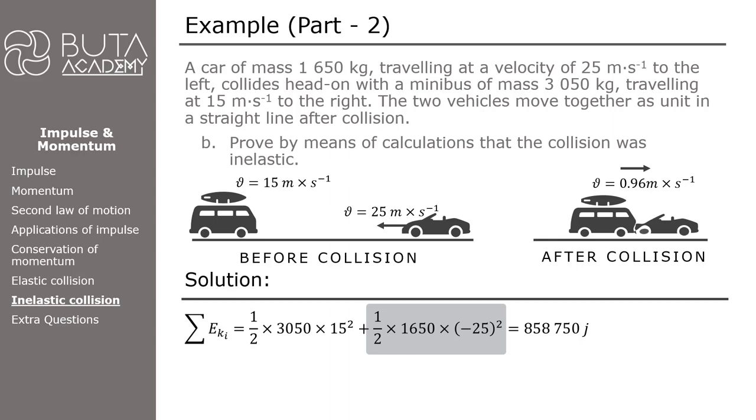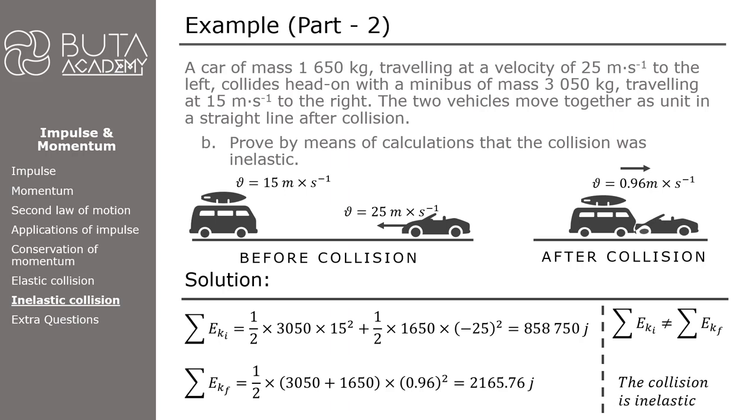Following the collision, the minibus and the car move together as one unit. As a result, their kinetic energy is equal to 1/2 times the total of the two vehicles' masses, 3050 plus 1650, multiplied by the square of the two vehicles' post-collision velocity, 0.96. The final value is 2165.76 joules. As is obvious, these two values are different from one another. This results in a difference in the total kinetic energy before and after the collision. Therefore, this collision is an inelastic one.